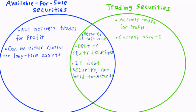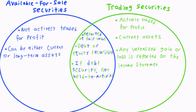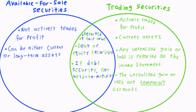There is one more key difference between available-for-sale and trading securities, which is very important, and that is where the unrealized loss or gain is reported. An unrealized gain or loss means a gain or loss on an investment that has not yet been sold. For trading securities, unrealized gains and losses are reported on the income statement. Because trading securities are actively being traded, even though the investment has not yet been sold, it should still be included in income. The key thing to remember is that the unrealized gain or loss account used with trading securities is a temporary account that gets closed out each period.